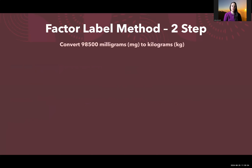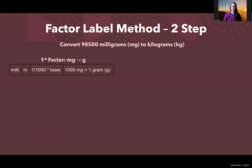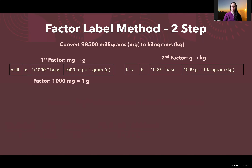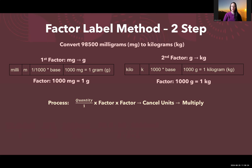Here's another example using the two-step factor label method. Let's convert 98,500 milligrams to kilograms. Our first factor takes us from milligrams into grams: from our table, 1,000 milligrams equals one gram. Our second factor goes from grams to kilograms: 1,000 grams equals one kilogram. We apply the same process — quantity times factor one times factor two, cancel units, and multiply.